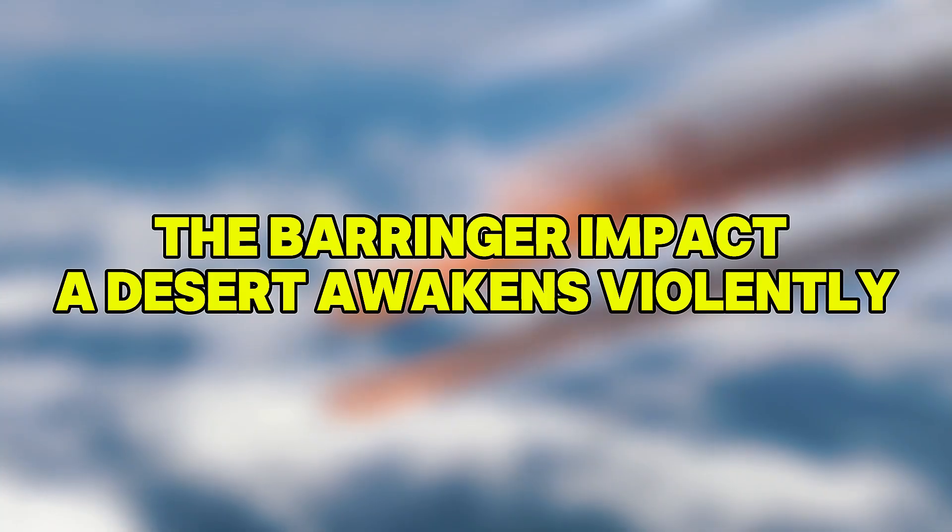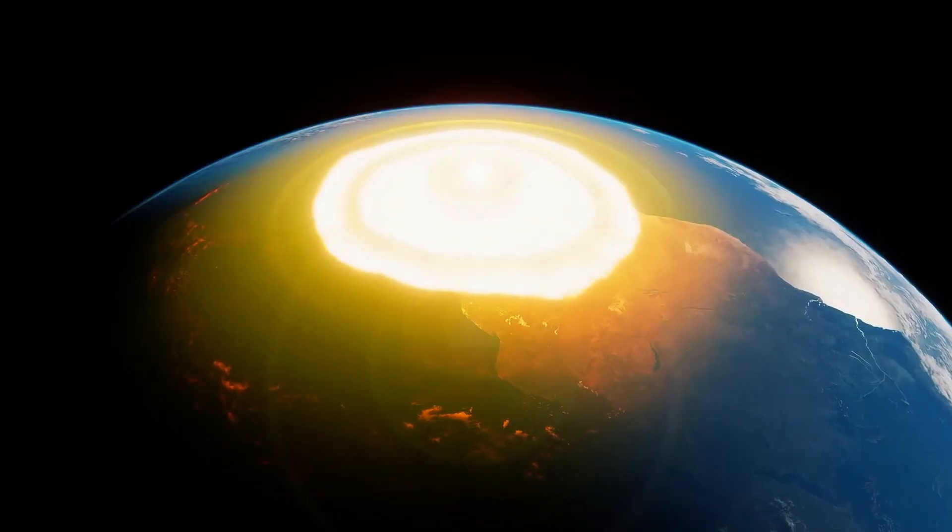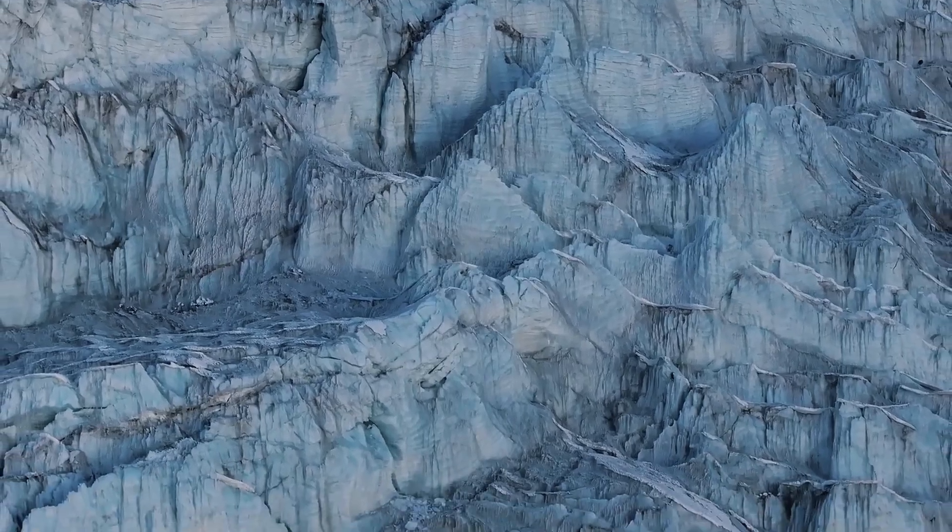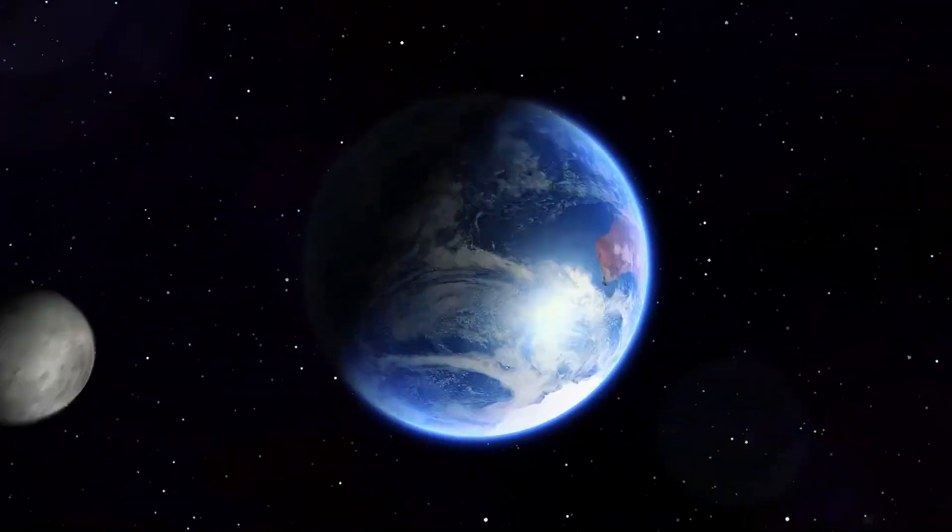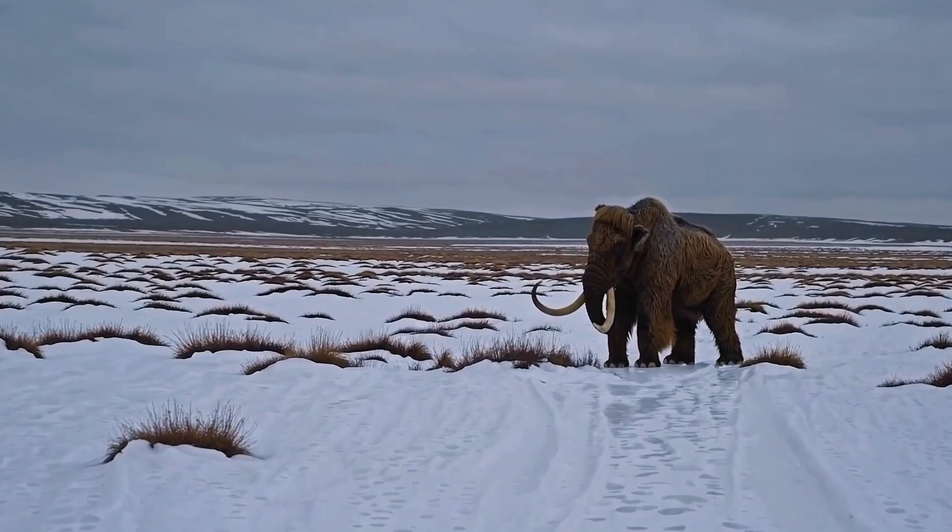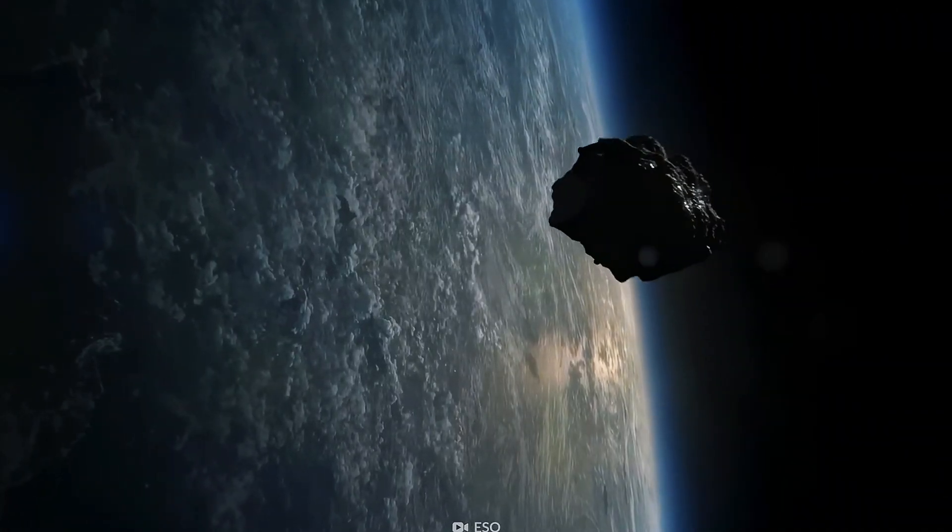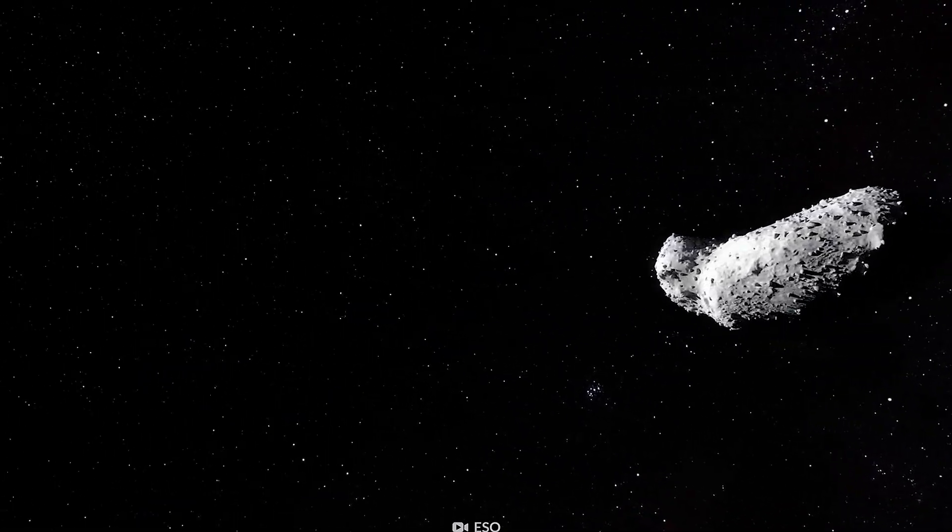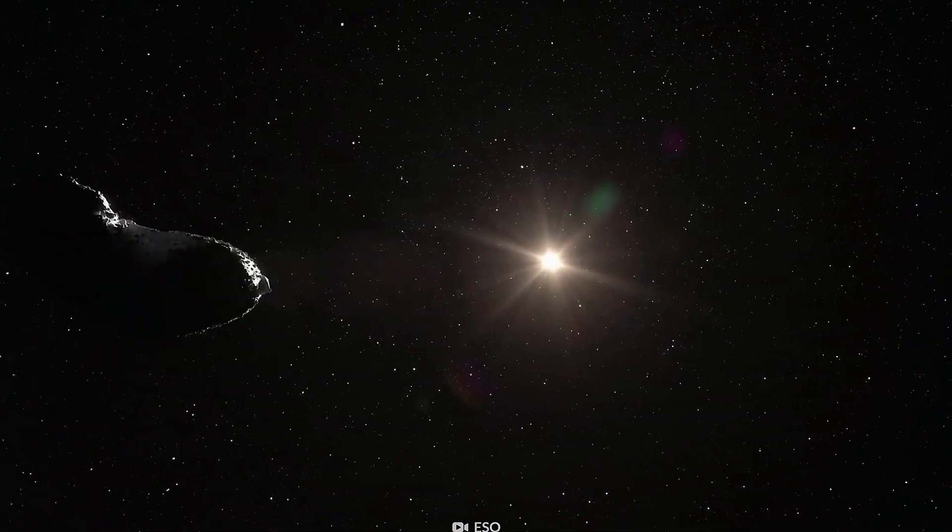The Barringer Impact. A desert awakens violently. Our simulation begins gently, if that word can apply to an explosion equivalent to multiple nuclear detonations. 50,000 years ago, in what is now Arizona, a roughly 50-meter-wide iron asteroid plowed into Earth. It carved out what we now call Meteor Crater, a scar nearly a mile wide and deeper than most office towers are tall. Now it returns.